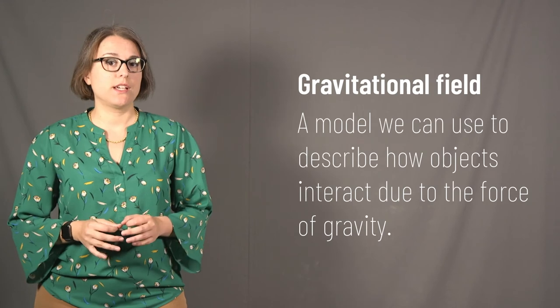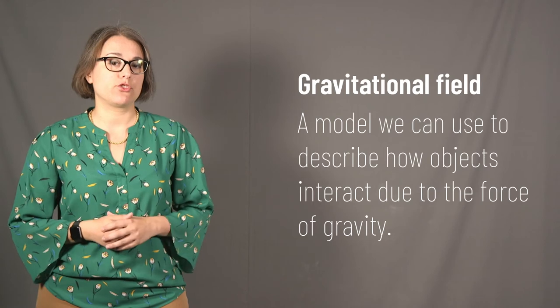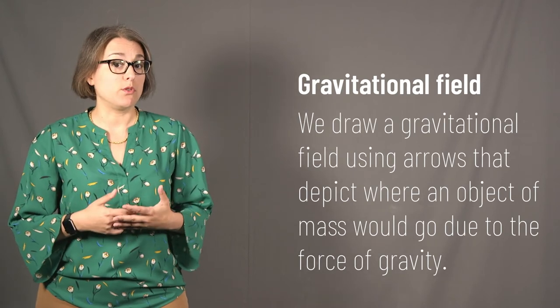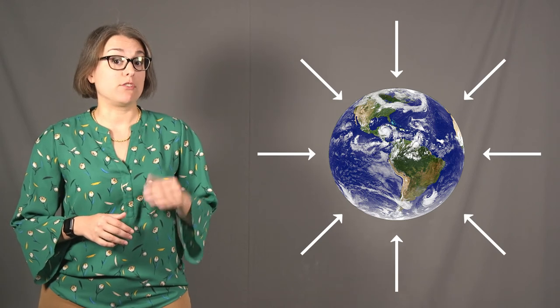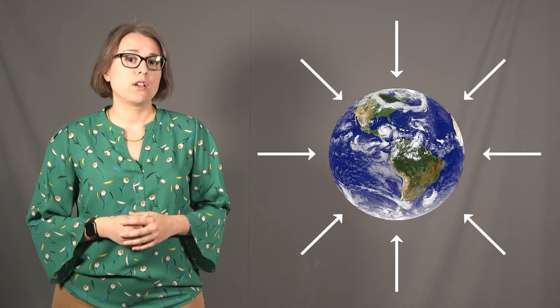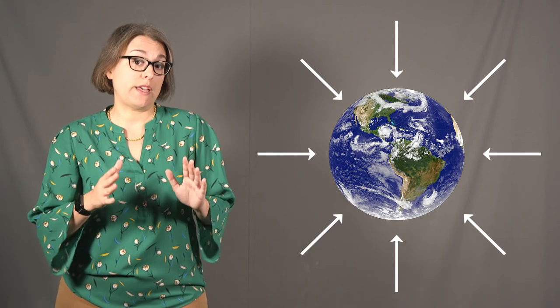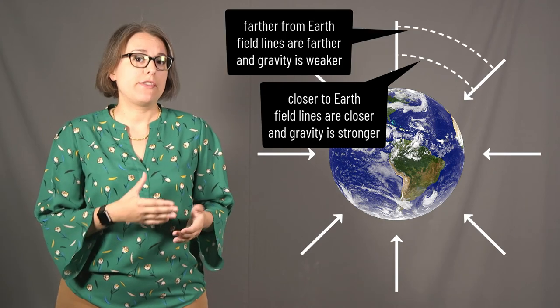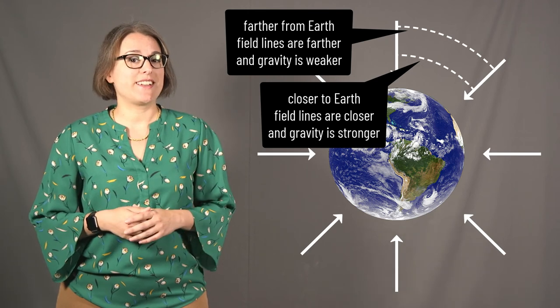A gravitational field is a model we can use to describe how objects interact as a result of gravitational forces. We can draw a gravitational field by showing where any object placed around a massive object would move due to gravity. The field is three-dimensional in reality, but here we'll show it as two-dimensional. Any object of mass will want to move toward the center of the Earth, and we depict the direction of the field using arrows pointing toward the center. Close to the center of the Earth, the arrows are much closer together than they are far away — this makes sense based on our understanding of the inverse square law.